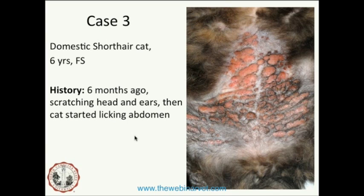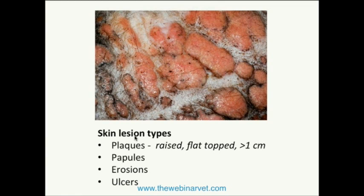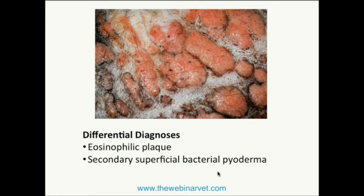Case 3: a domestic short-haired cat, 6-year-old female spayed, with six months of scratching of the head and ears, then started licking the abdomen. The cat presented with multifocal and coalescing lesions on the ventral abdomen. Looking closely, most of these are plaques — raised flat-top lesions greater than a centimeter — and some are papules less than a centimeter. Many have erosions and ulcers with a wet granulated surface. The erosions and ulcers are probably secondary to self-trauma. The main differential is eosinophilic plaque syndrome in cats with secondary superficial bacterial pyoderma.